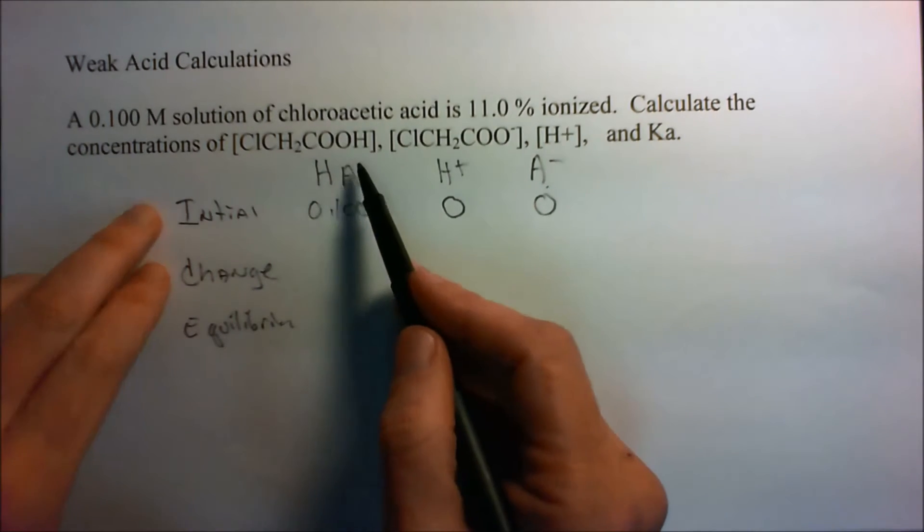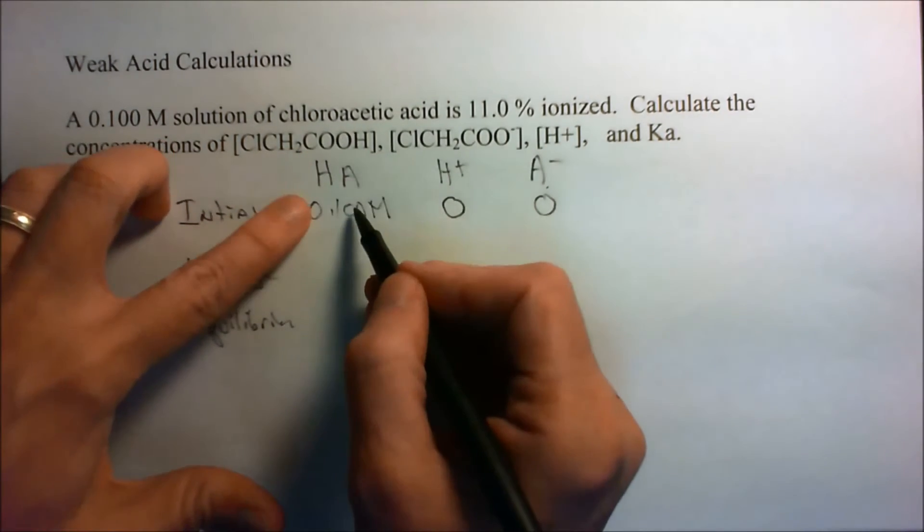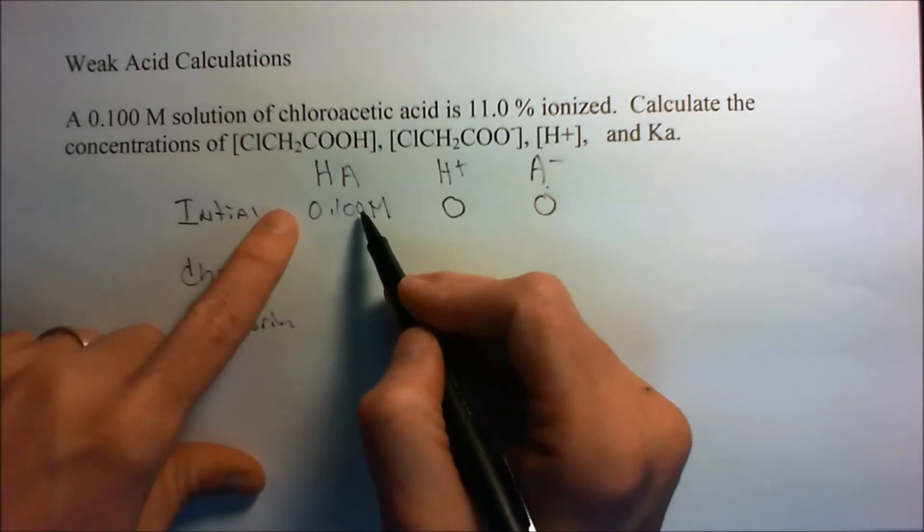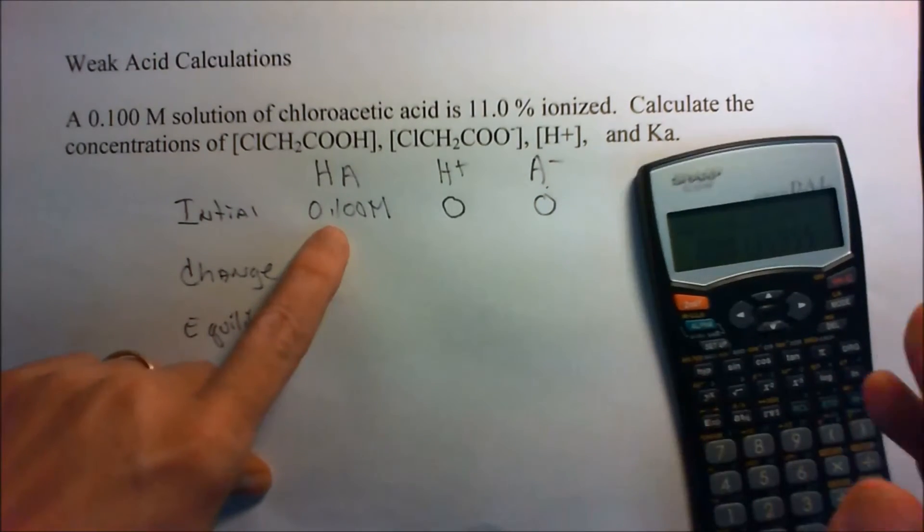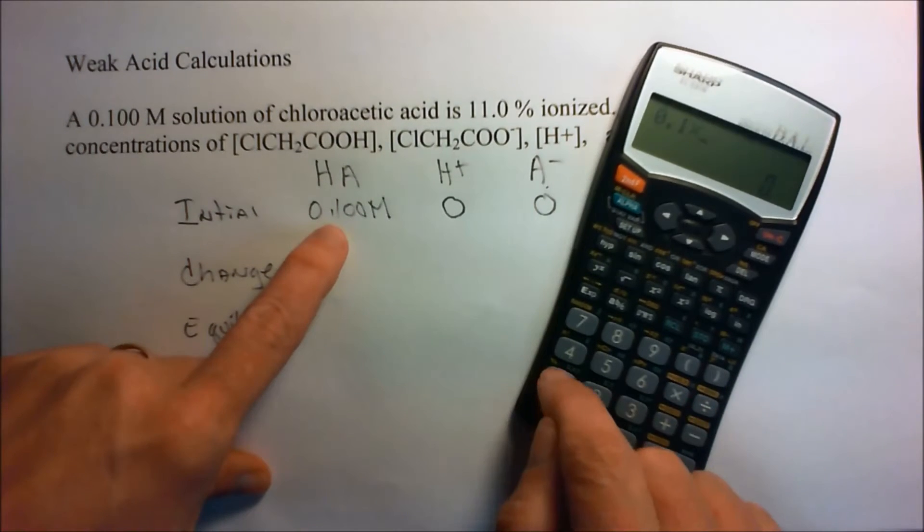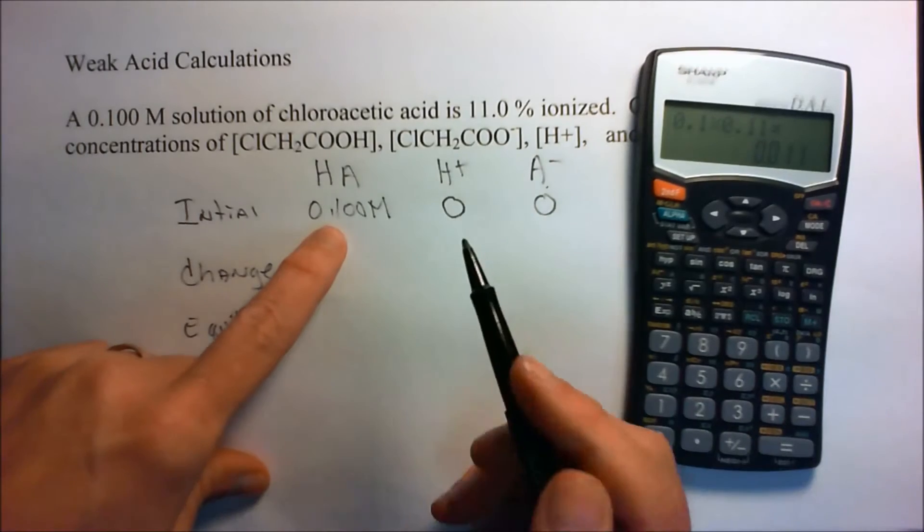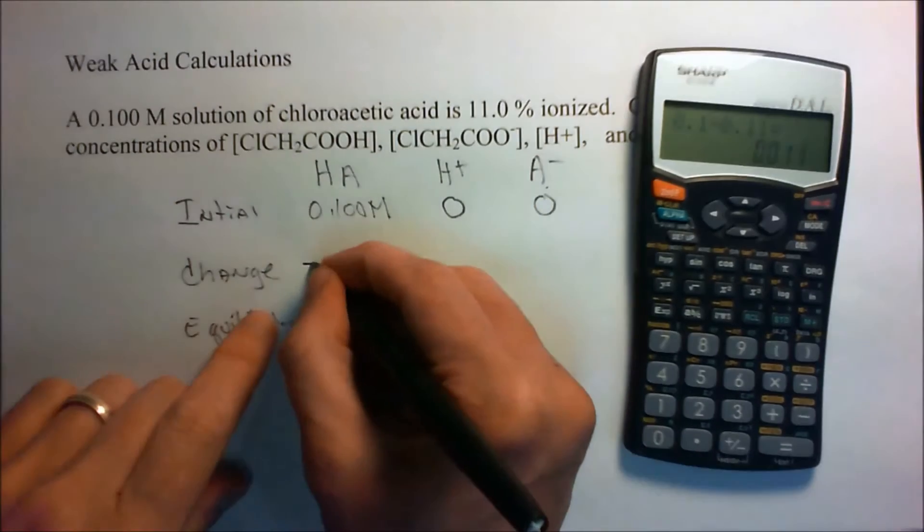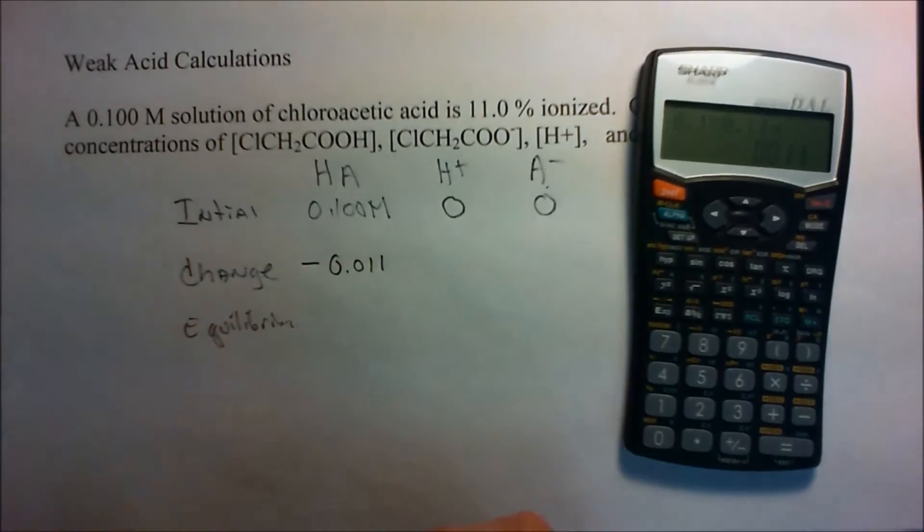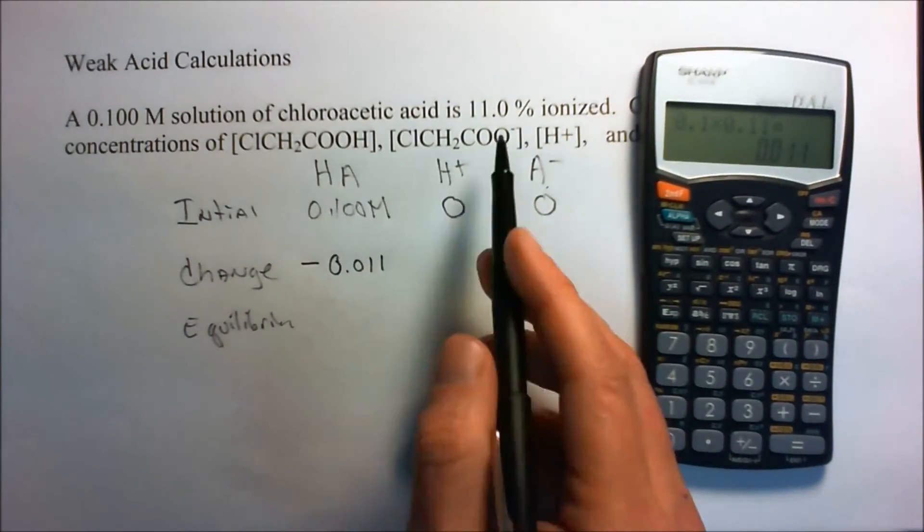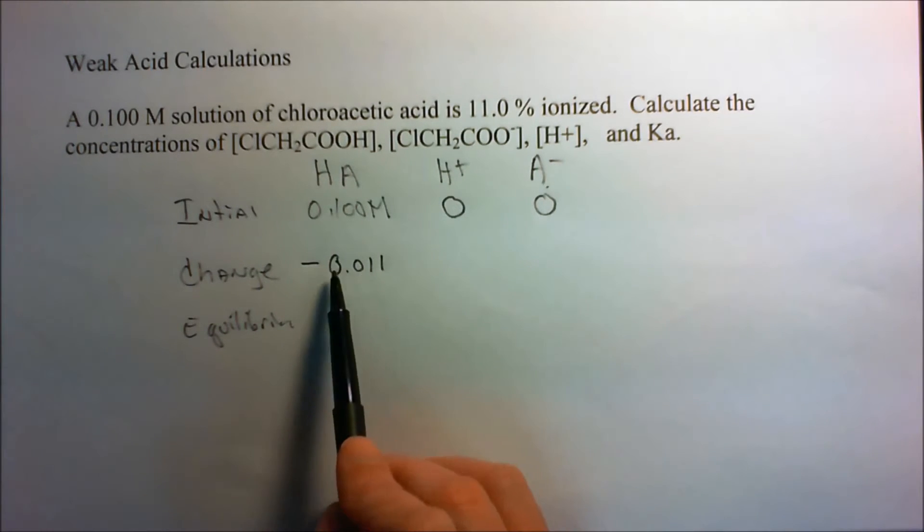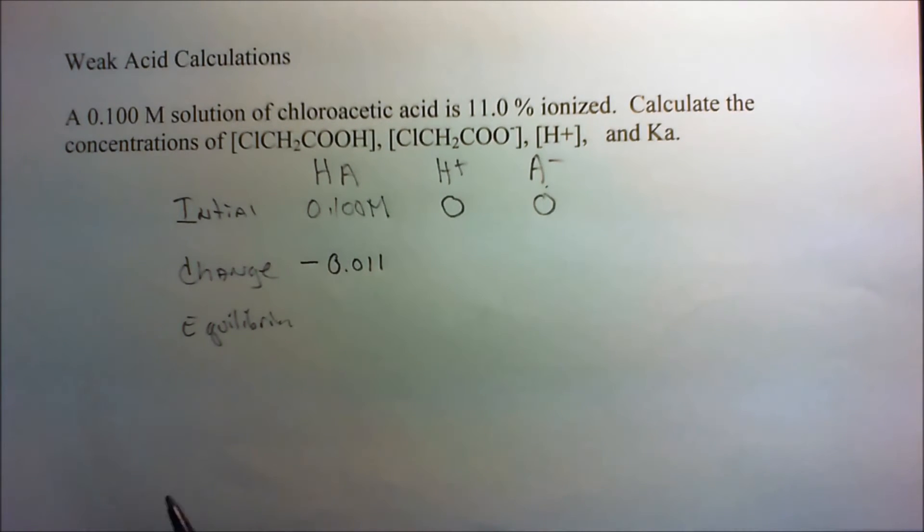Now the change is going to be minus 11 percent. So if it's 11 percent ionized, well what's 11 percent of 0.1? So we go 0.1 times 0.11, that's 11 percent, and I get 0.011. So it's going to lose 0.011 in ionization. That's what it means to be 11 percent ionized. It's going to lose 11 percent, and it works out that 11 percent of 0.1 is 0.011.